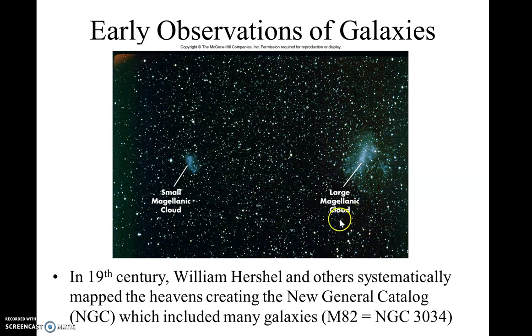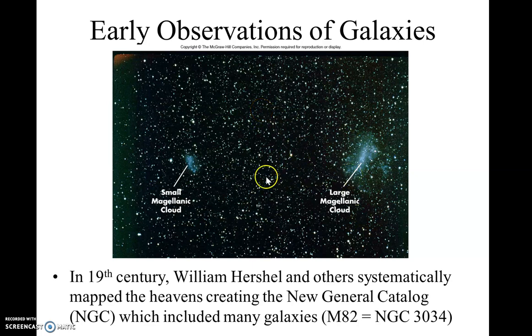These two small irregular galaxies are the Large and Small Clouds of Magellan, as they're called. You can only see these in the Southern Hemisphere.